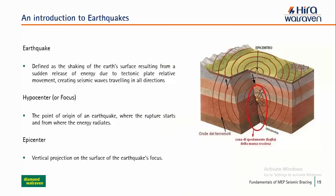Here is an introduction to what an earthquake is and how it arrives. An earthquake is basically a sudden movement or change in the plates in the soil. Because of those changes, energy is released on the surface of the earth. We have two technical terms: the hypocenter — the point of origin where the earthquake originates — and the epicenter, which is the reflection of that energy on the earth's surface.